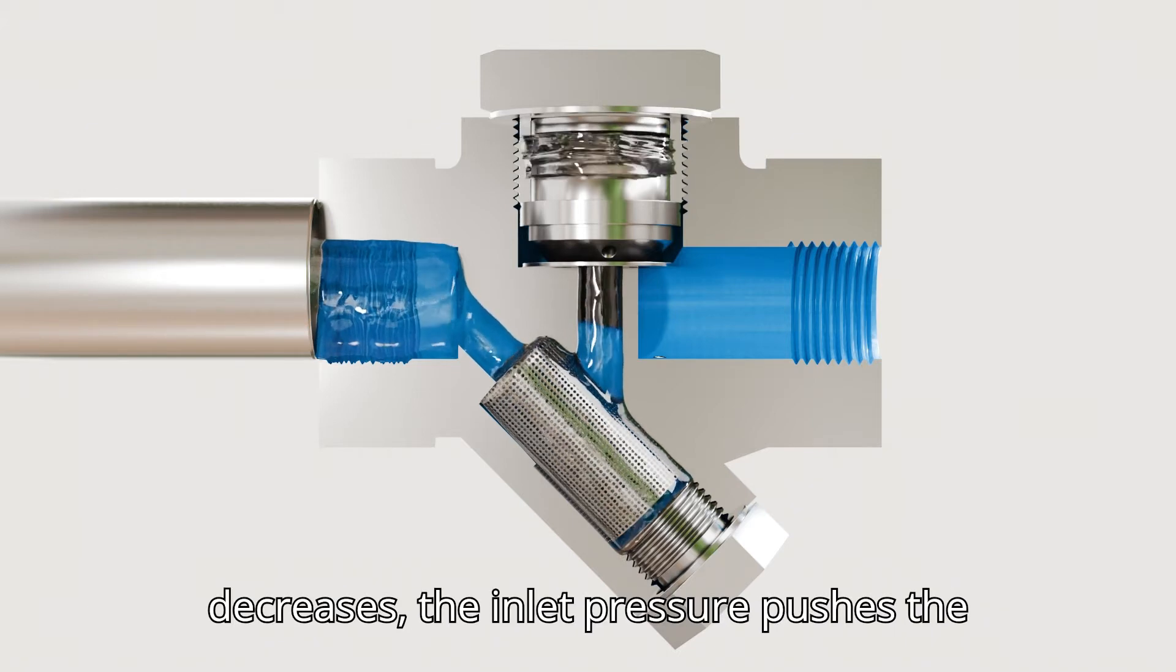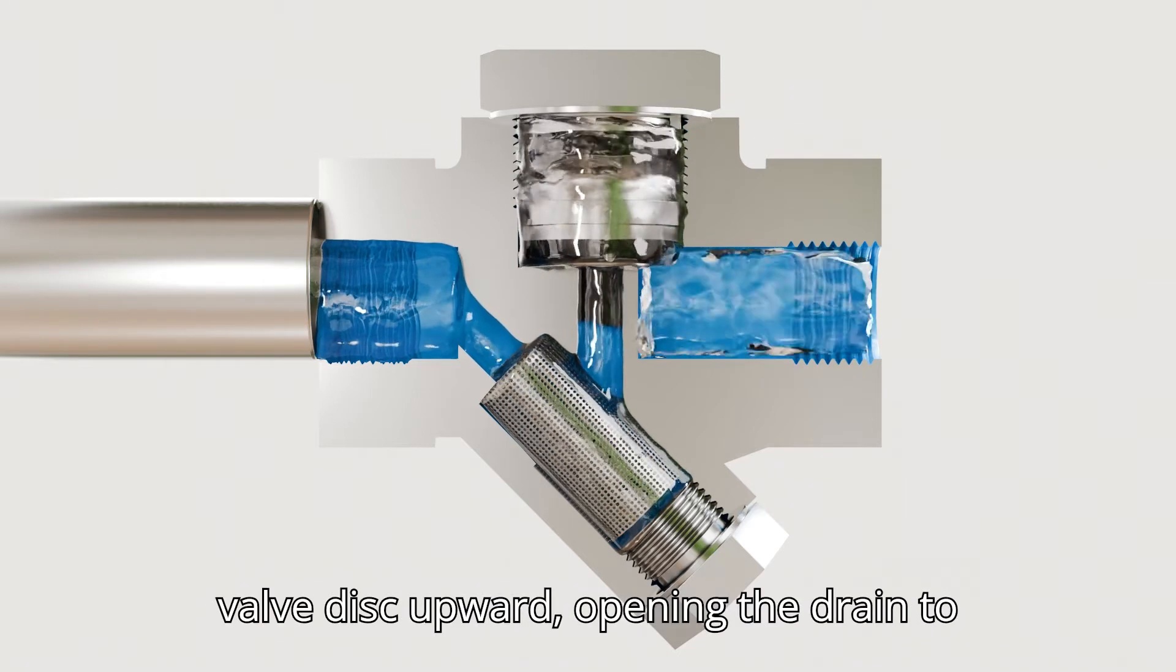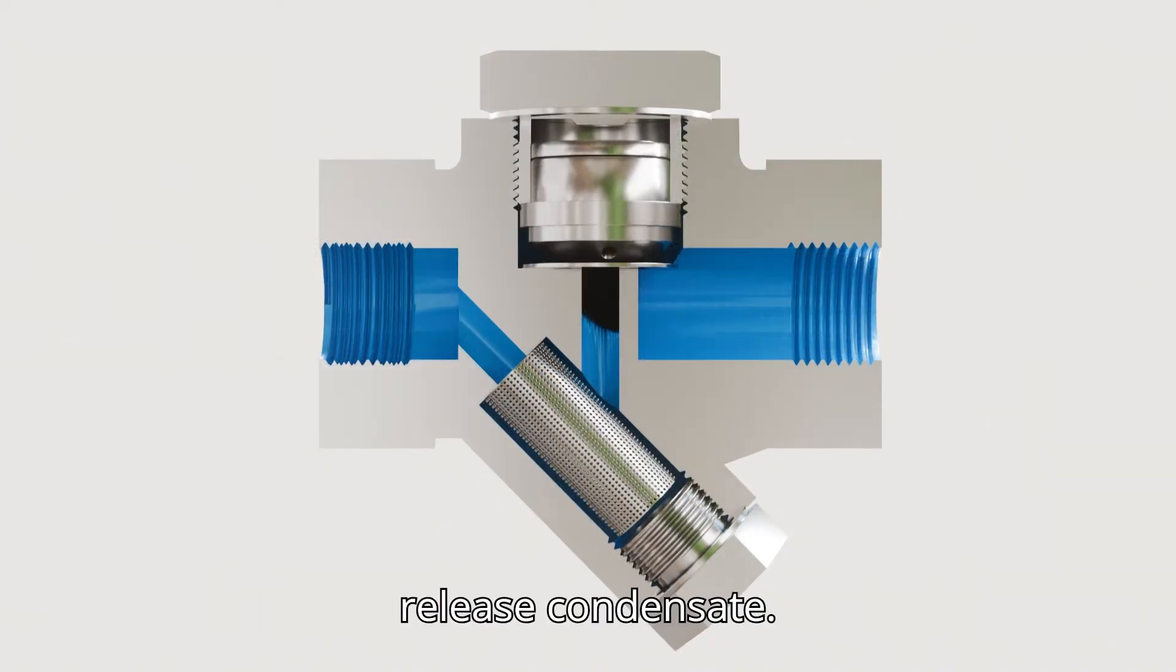Once the pressure decreases, the inlet pressure pushes the valve disc upward, opening the drain to release condensate.